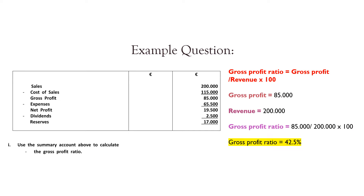Let's look at an example question. Use the summary account above to calculate the gross profit ratio. The gross profit ratio is gross profit divided by revenue times by 100. In this question, the gross profit is £85,000 and the revenue is £200,000. So we would do 85,000 divided by 200,000 times that by 100, which means that the gross profit margin is 42.5%.